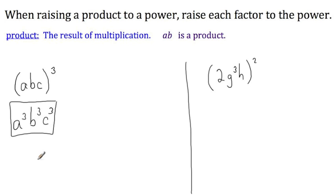Let's consider where this rule came from using the definition of an exponent. We can rewrite this expression using the definition of an exponent as this expression raised to the third power. That just means I need to multiply it by itself three times. So that will be ABC times ABC times ABC.